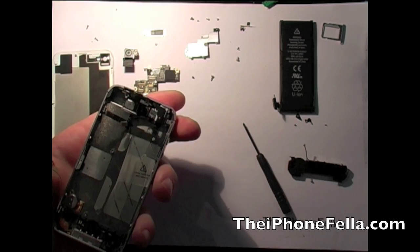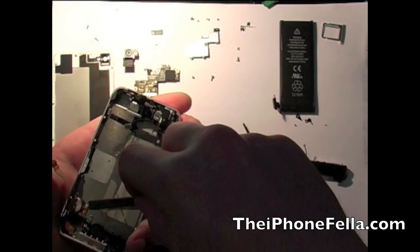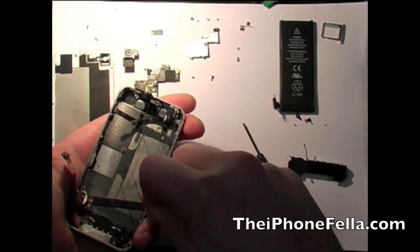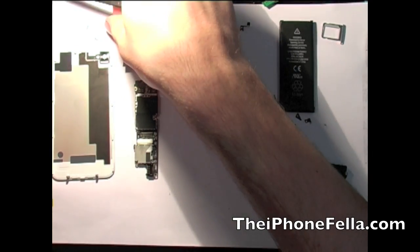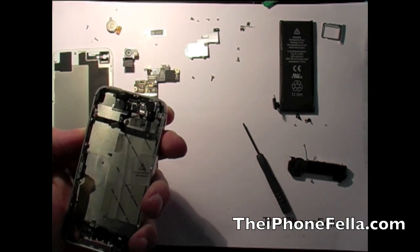Next, remove the vibrator module. It is necessary to do this to gain access to all of the screws. I'm just going to use this plastic pry tool to slip it out of place.